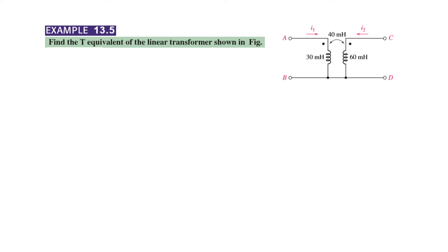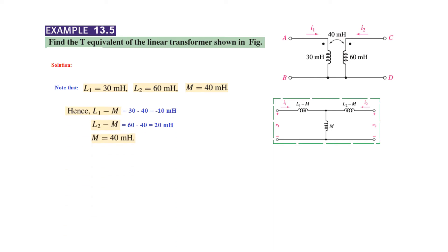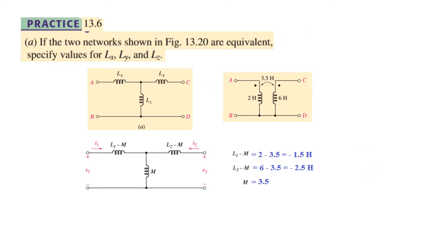Let's solve the example: find the T equivalent of the linear transformer shown. This is very simple. We know L1 = 30 mH, L2 = 60 mH, and M = 40 mH. Plugging in: L1 − M = −10 mH, L2 − M = 20 mH, and M = 40 mH. That is the answer, and we can draw it directly in the diagram.